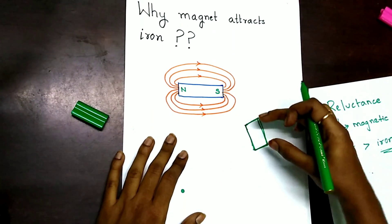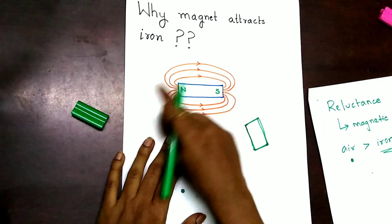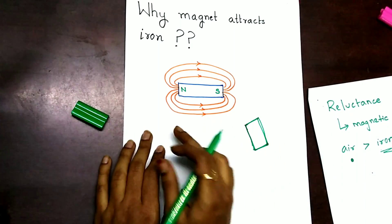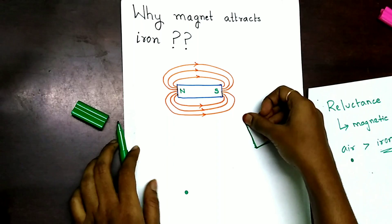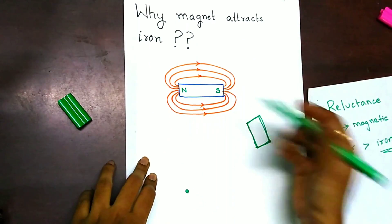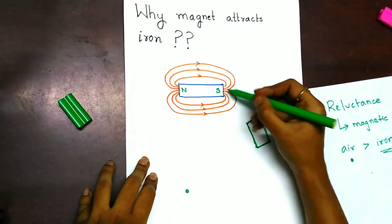since the reluctance of this iron piece is less than that of the surrounding air, the magnetic lines of force start diverting its path. That is, the magnetic lines of force are distorted such that they try to enter through the iron path instead of air.